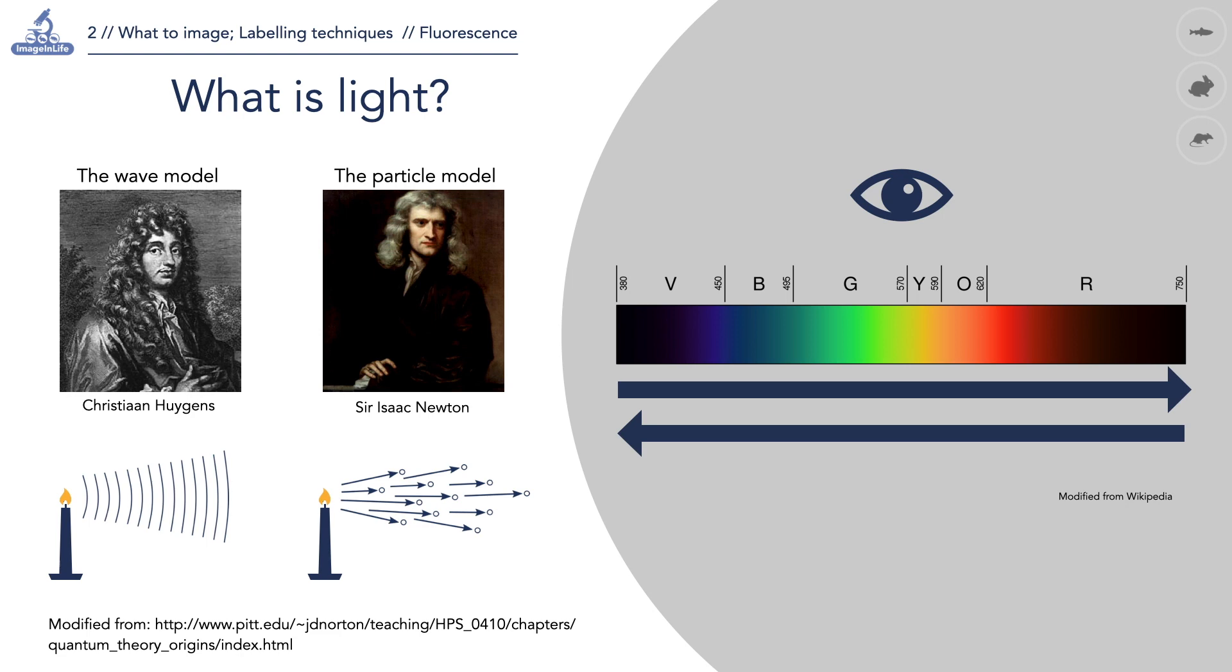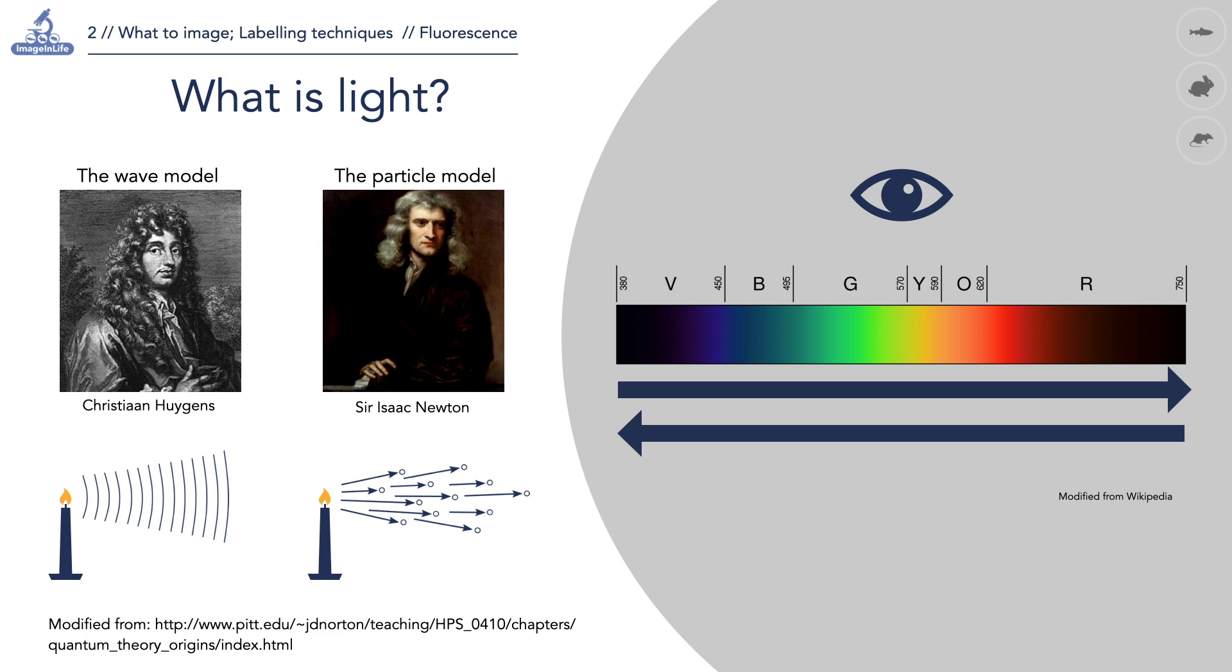This is a graphical representation of the light spectrum visible to the human eye. Photons are classified according to their energy and the corresponding wavelength and color.